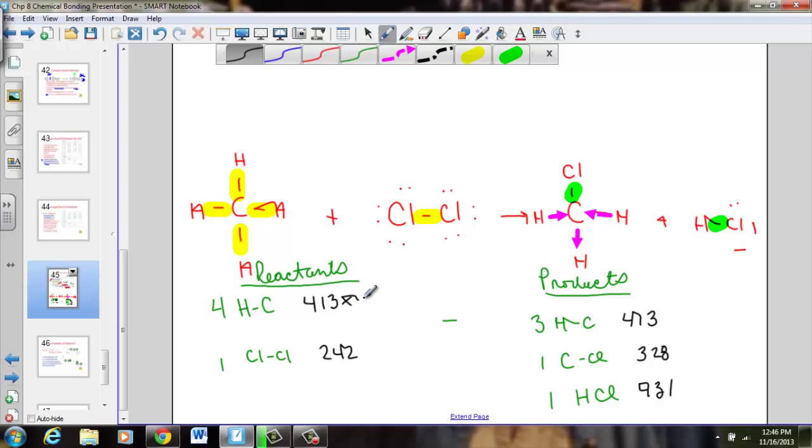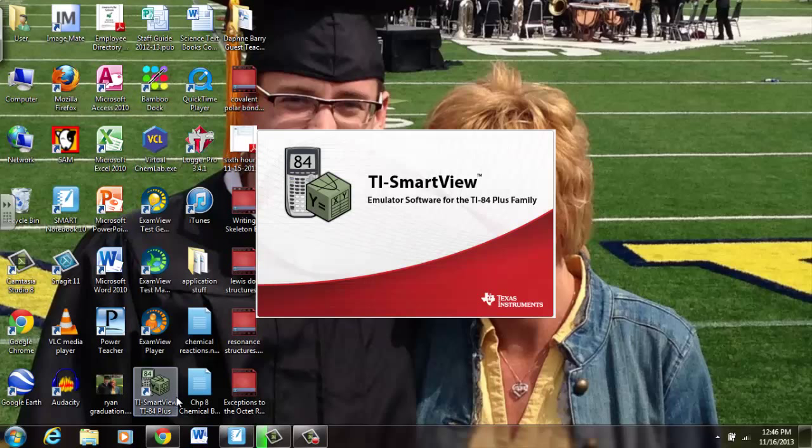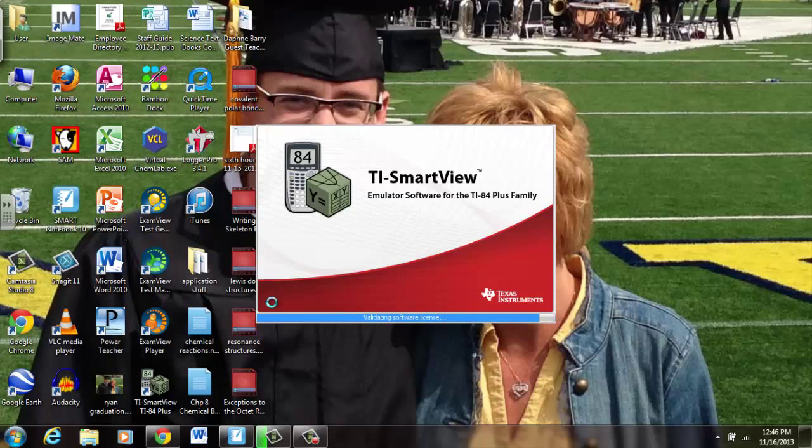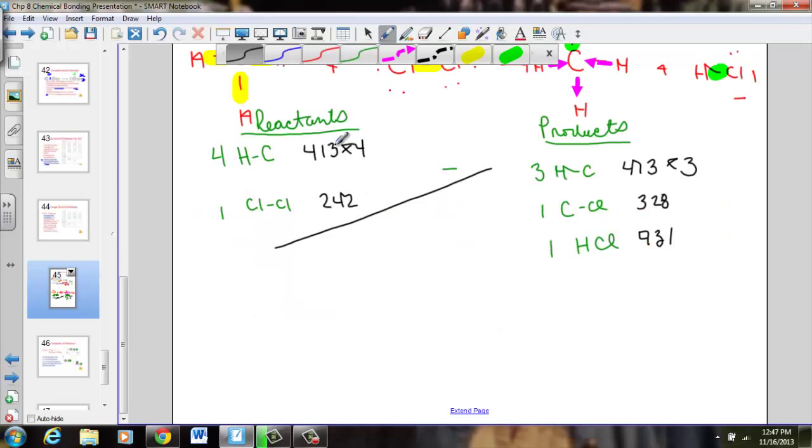All right. So what do we have? Well, I know I have four of those bonds and three of these bonds. So we're going to need a calculator. We're going to need to tabulate all the bonds broken minus all the bonds formed, and we'll find our average delta H of reaction. I should have had my calculator on. I bet you're working ahead of me, as you should be. So I'm sorry, I'm getting a phone call at this point.